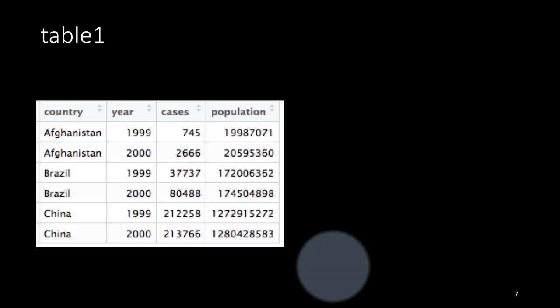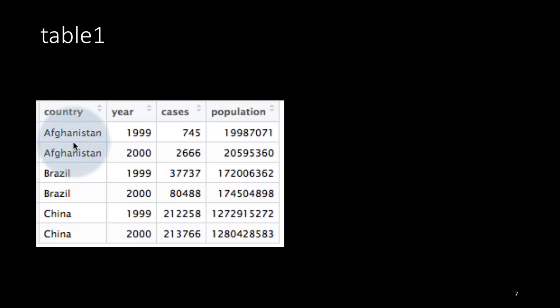So for example, we can take a look at some data which looks like this. So here we've got a country, Afghanistan, Brazil, China, etc. You've got the years 1999, 2000 for each of the countries. So each country occurs twice.